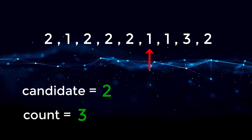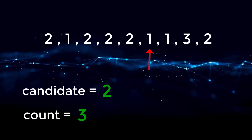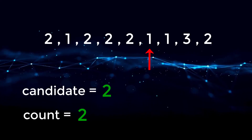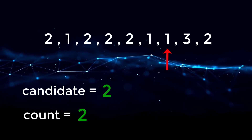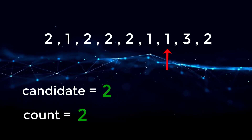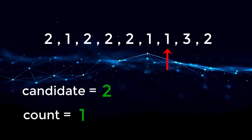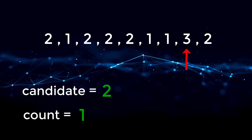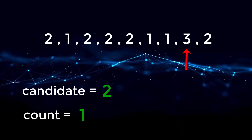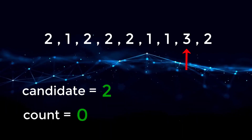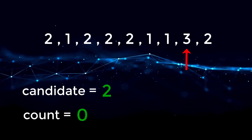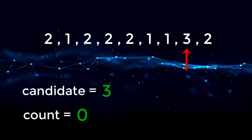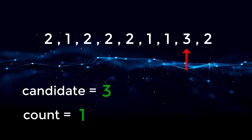Then we move to one — two is not equal to one, so we decrease count. Count is now two. We move to another one — two is not equal to one, so we decrease count again. Count is now one. Then we move to three — two is not equal to three, so we decrease count to zero. That means we take the new candidate at the current position — candidate becomes three and count becomes one.